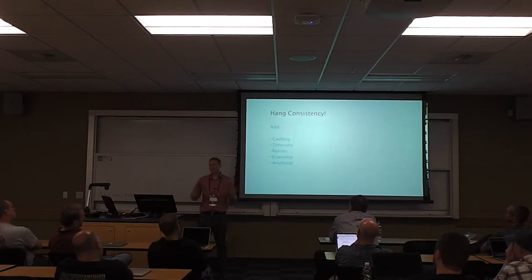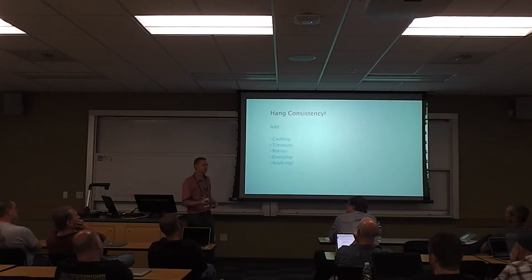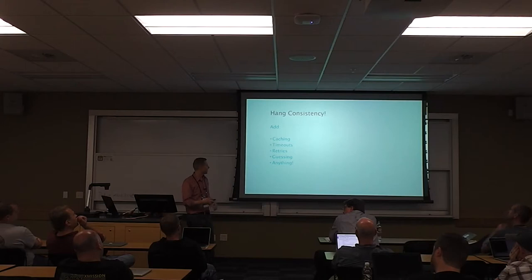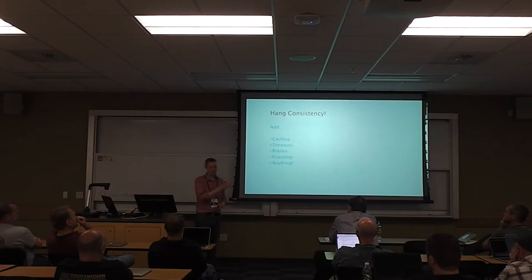So I should say: pain consistency. Most of our applications, if we're not building a financial application, go ahead and add some caching. Return stale data sometimes — as long as that's less often than you serve correct data. Add timeouts and retries. Add guessing. Think of Amazon — if you're trying to generate revenue, if you're trying to let a user access their data, why not guess?